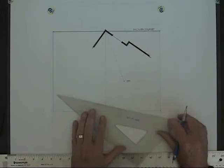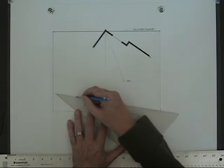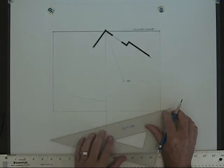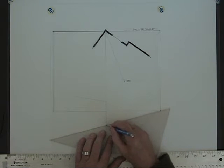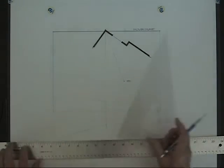Now from the vanishing points I can begin to lay out the left wall of the room. And I will now start on the right wall of the room.